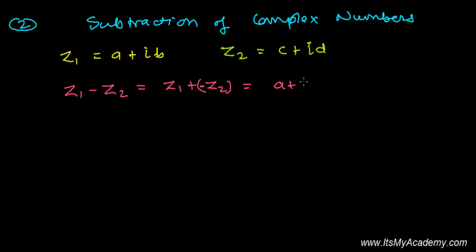So I can write it as A plus IB plus the negative of Z2, which is minus C plus I times minus D.